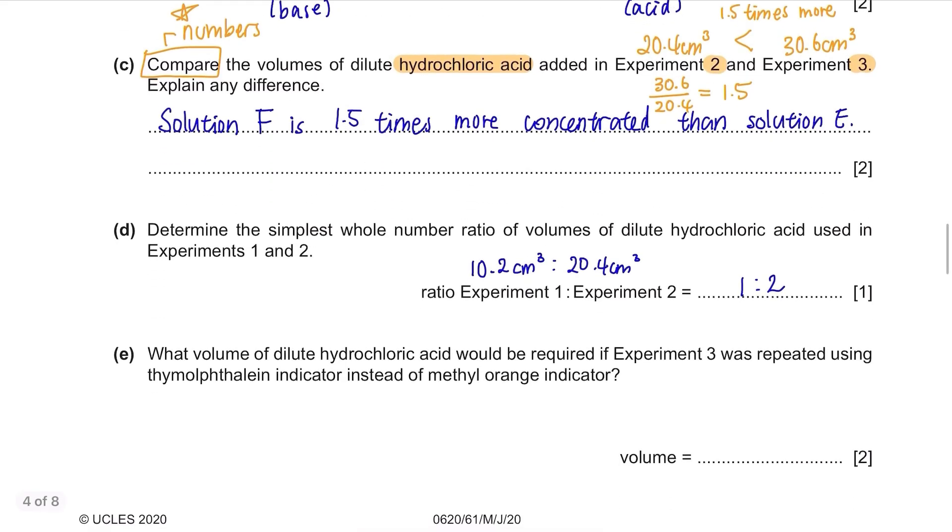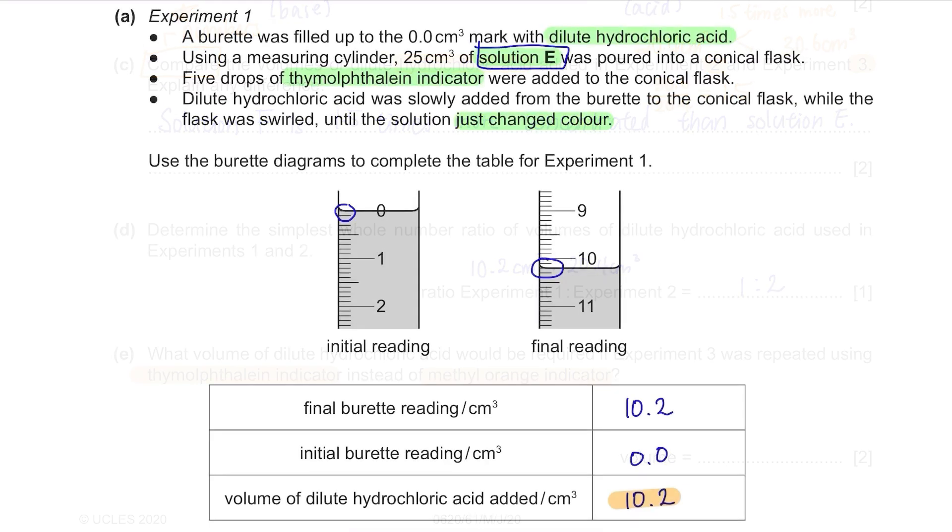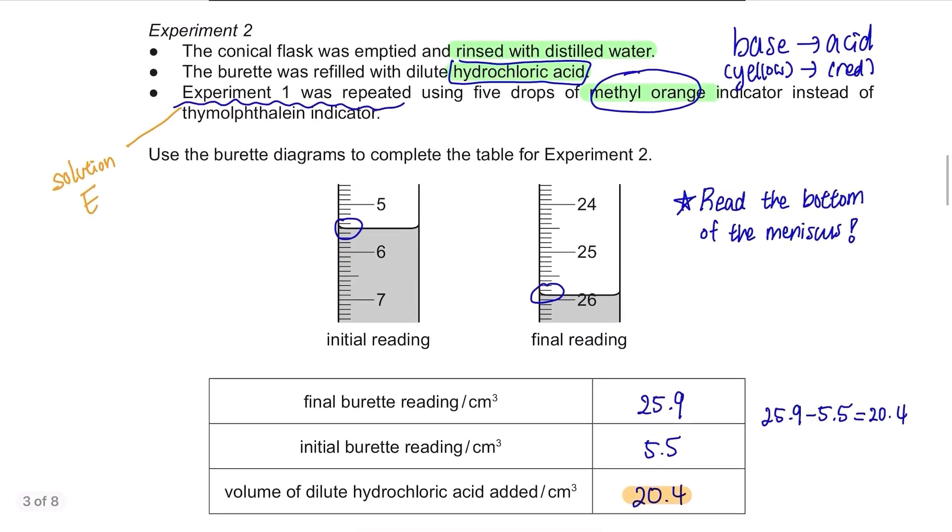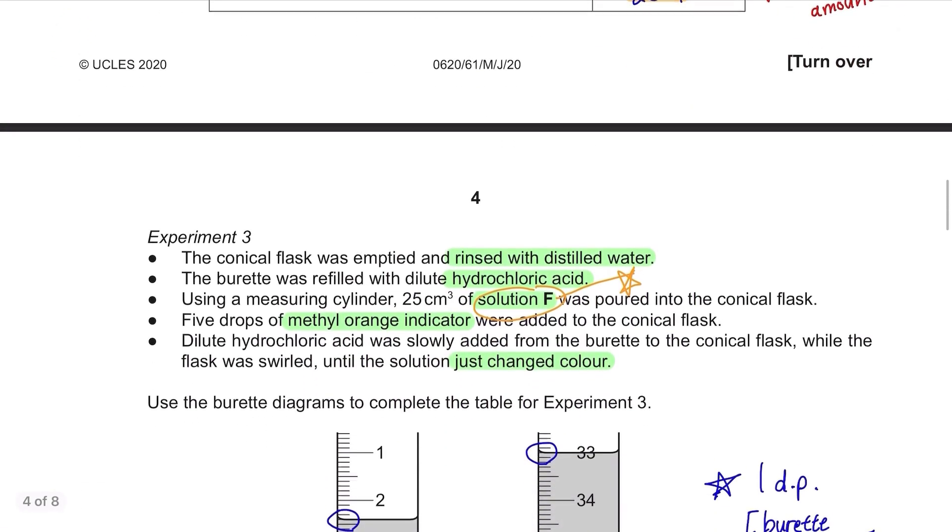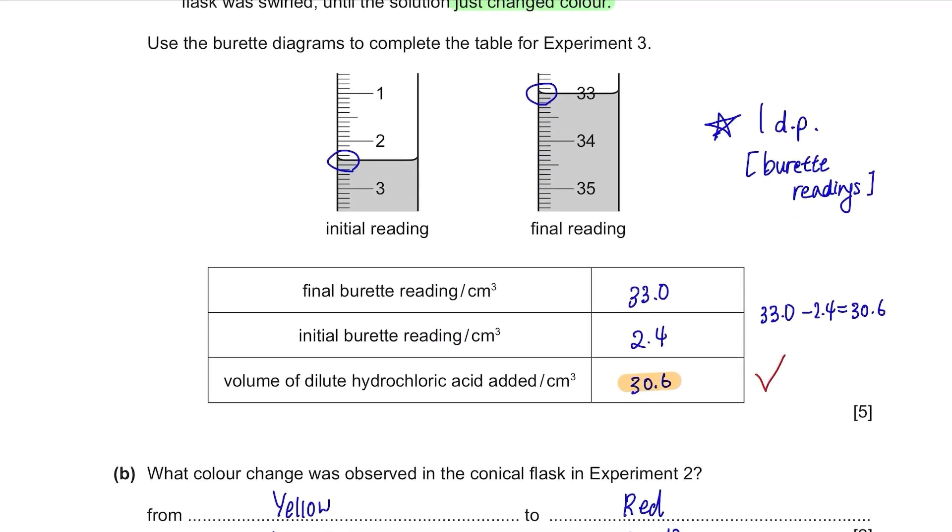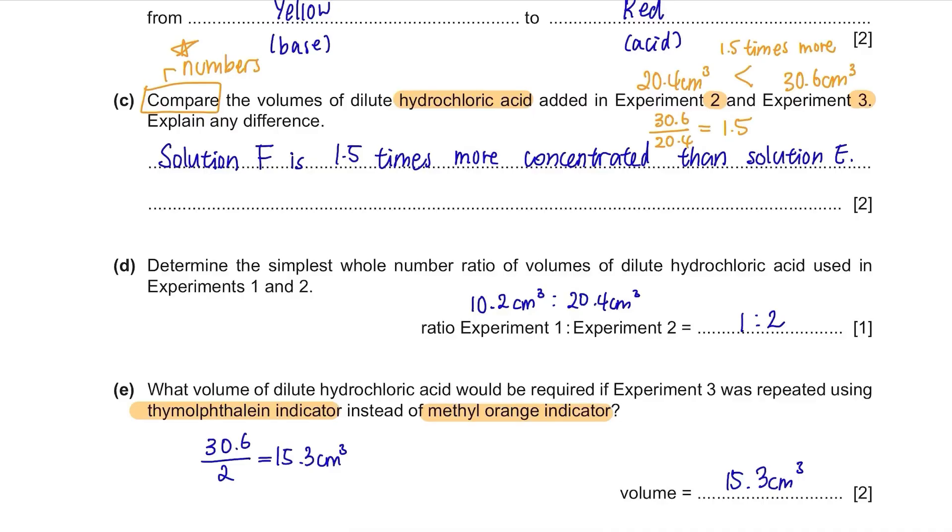Part E. What volume of dilute hydrochloric acid would be required if experiment 3 was repeated using thymolphthalein indicator instead of methyl orange indicator? In experiment 1, they used thymolphthalein indicator and had to add 10.2 cm³ of hydrochloric acid to see a colour change. Then in experiment 2, they used methyl orange indicator and added 20.4 cm³ to see a colour change. This shows that if you use thymolphthalein instead of methyl orange, you only need to add half of hydrochloric acid. Since they used 30.6 cm³ in experiment 3, the answer will be 15.3 cm³.